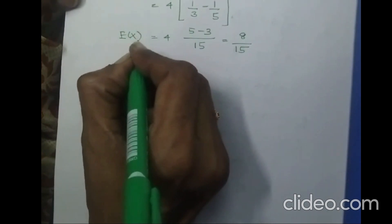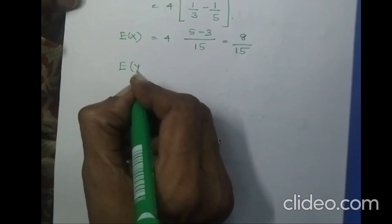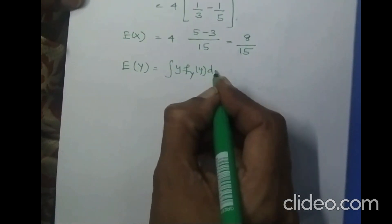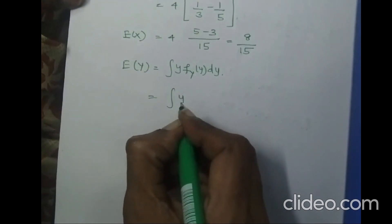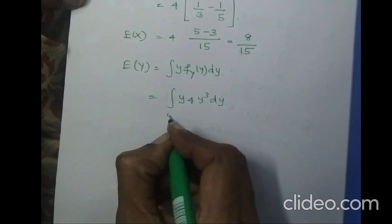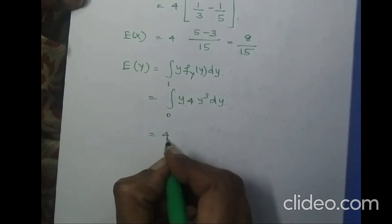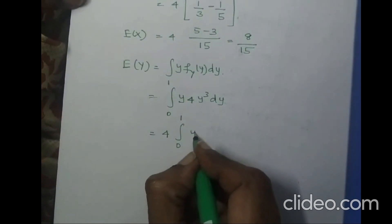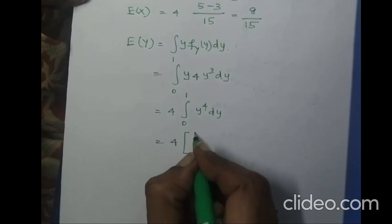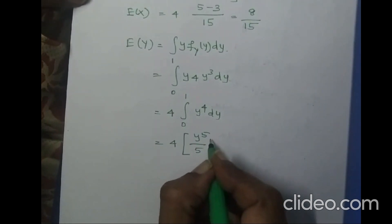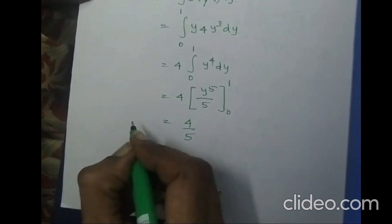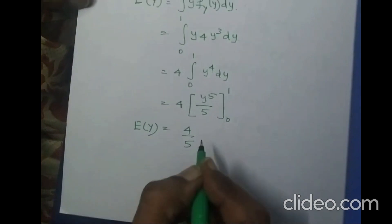E(Y) = integral of y · fy(y) dy = integral from 0 to 1 of y · 4y³ dy = 4 · integral from 0 to 1 of y⁴ dy. Integrating: 4 · [y⁵/5] from 0 to 1 = 4/5. So E(Y) = 4/5.